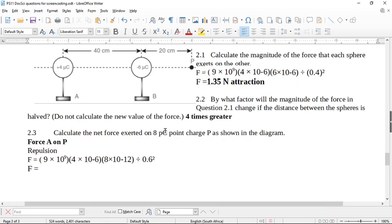I get a very small number. I get 8 times 10 to the negative 7 Newtons. And remember, this is repulsion. So where is P going to go? P is going to be forced away by this force to the right.